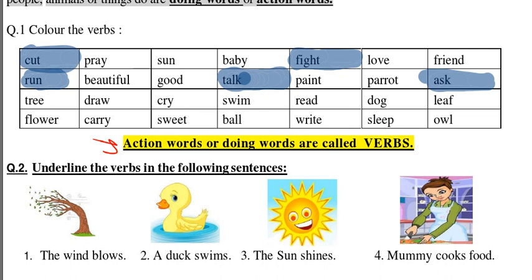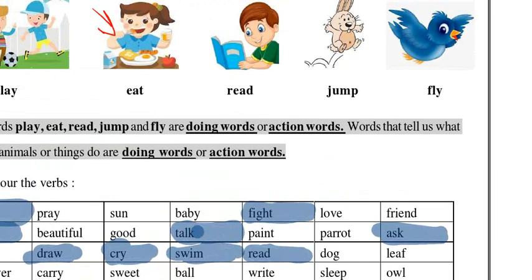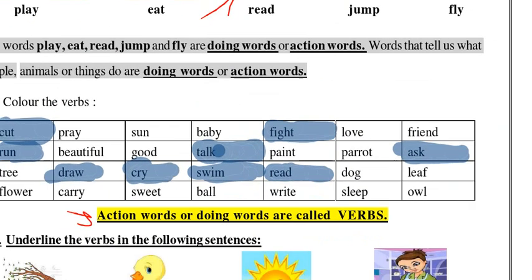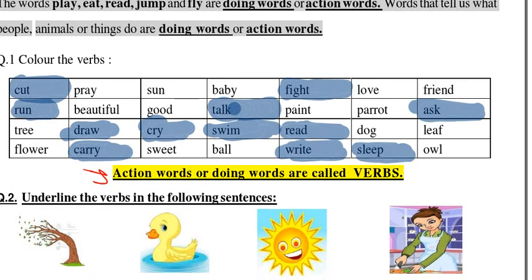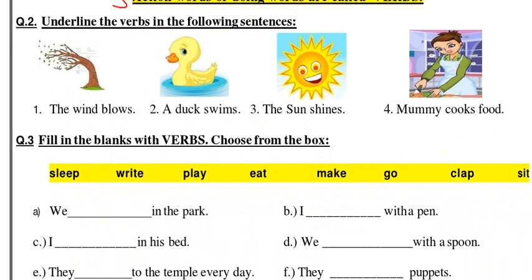'Draw' — yes, draw is also a verb. 'Cry' — yes, cry is also a verb or action. 'Swim' — this is also an action. 'Read' — yes, the boy in the picture above was reading the book, so read is a verb. 'Dog' no, 'leaf' no, 'flower' no, 'carry' — carry is also one of the verbs. 'Sweet' is not a verb, 'ball' is not a verb. 'Write' is an action so it's a verb. 'Sleep' — that is also a verb. 'Owl' — that is not a verb because that is not an action.